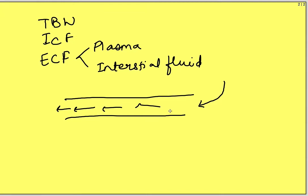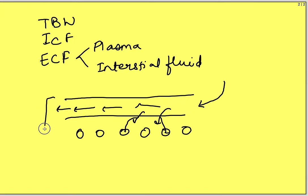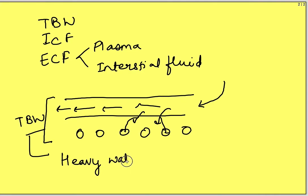If a substance can freely cross the capillary membrane and also freely enter into the cells, then after some time it would be present in all body fluid compartments, meaning such a substance will determine total body water. One such substance is radioactive water, or heavy water. When we inject it, it will go into all body fluid compartments, and by determining the concentration back — that is c2 — we can determine the new volume.